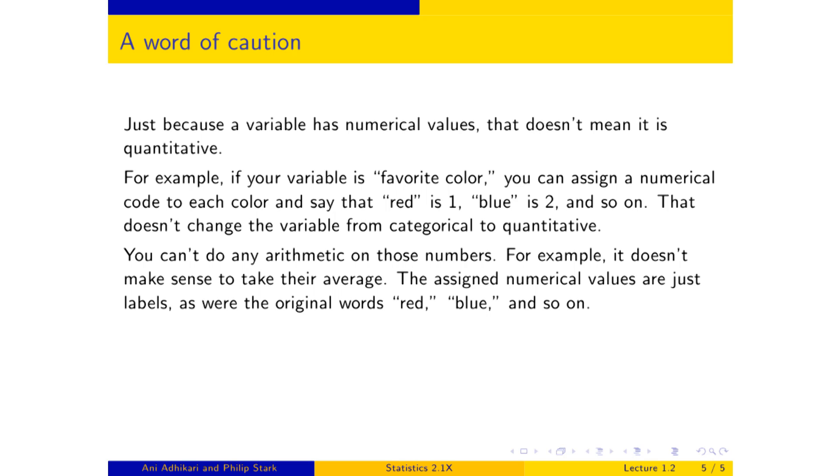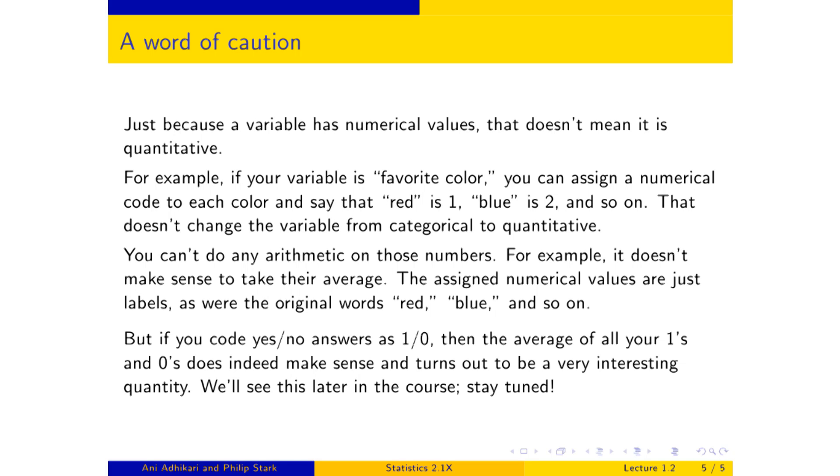There is one interesting case though. If you have a question to which the answer is yes and no, that's it, no other possibility, just yes or no, and you assign the code 1 to yes and 0 to no, those zeros and ones are very powerful. Indeed, the entire online system, your computer, my computers, are all based on those zeros and ones. If you code your answers 1 and 0, then the average of all of your ones and zeros is a very interesting quantity that we will meet later on in the course. Patience.